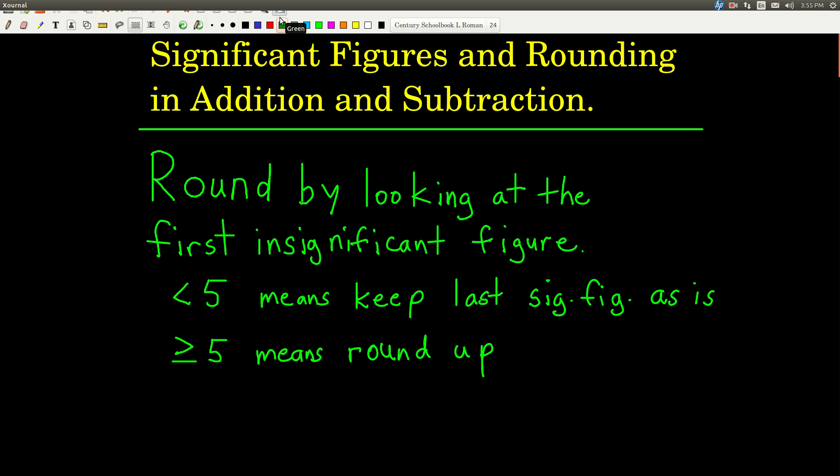But first, when we round, we just do simple rounding. That is, if our first number that we're going to drop, our first insignificant figure is less than five, then we just keep the last significant figure that we're going to keep as it is. If the first number that we're going to drop, that is our first insignificant figure is greater than or equal to five, then we're going to round up.